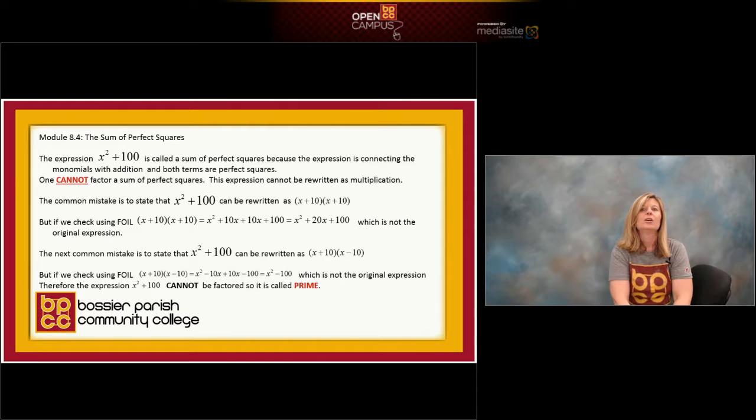All right, so here comes the next boo-boo. Somebody's going to tell me oh x squared plus 100 must be x plus 10 times x minus 10, the conjugates. It's the same rule again. I'm going to prove to you why that's wrong. If we take x plus 10 times x minus 10 and we do FOIL, first would be x times x which is x squared.